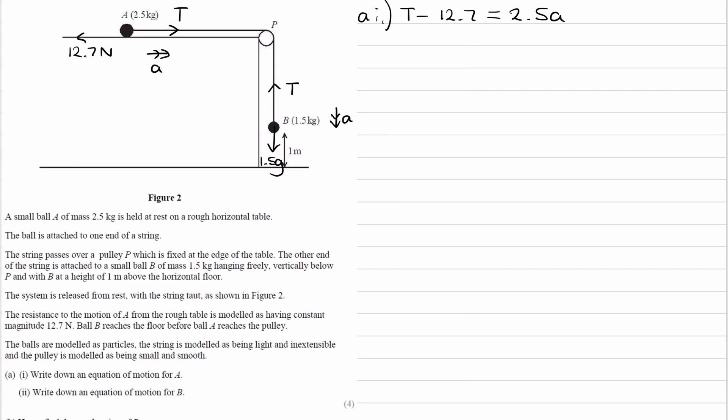And then for object B, it's a very similar kind of thing. The resultant force is downwards in this case, in the same direction as acceleration. That means the 1.5G will be bigger than tension. So the overall downward force would be 1.5G minus T. And that will be equal to MA. So this is your resultant force F, that's equal to MA. The mass of B is 1.5, and then we times that by our acceleration. So that's part A done.